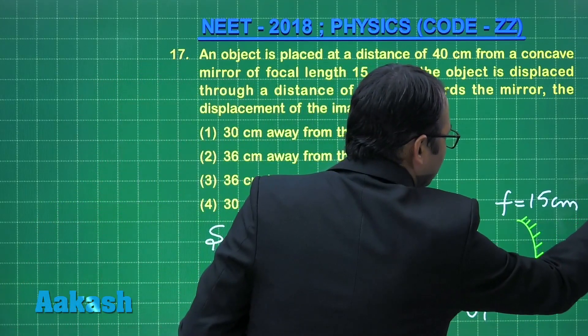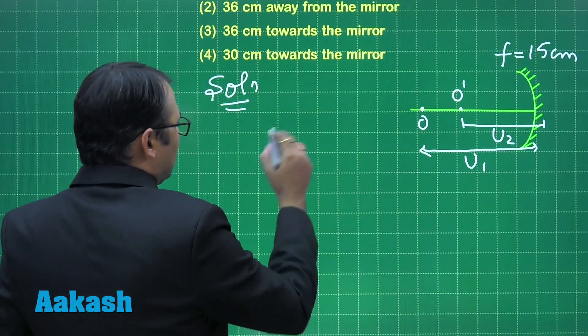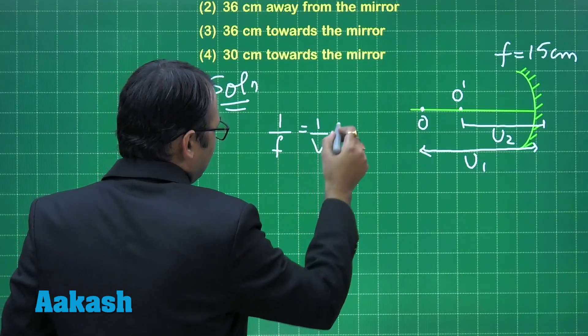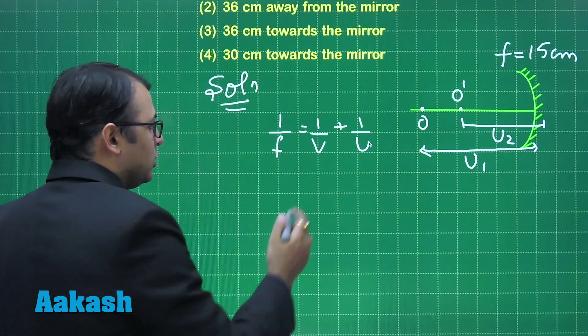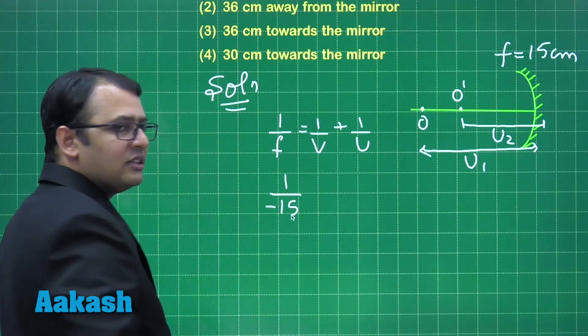Let us start. To solve this question, first we need the formula. So mirror formula you all know: 1 upon v plus 1 upon u. Concave mirror's focal length is written as negative, minus 15 cm.